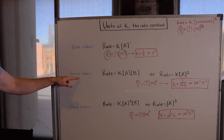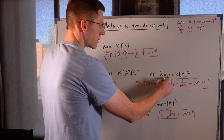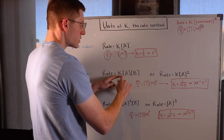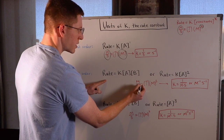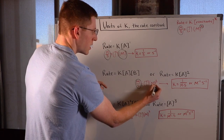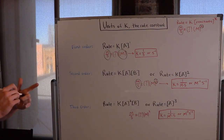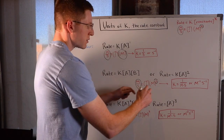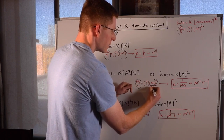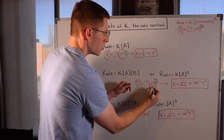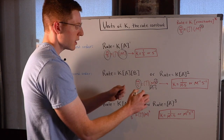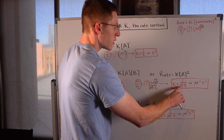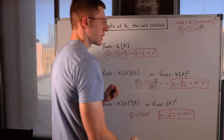What about if the reaction was overall second order? Then we would have something that looks like rate = K[A]² or rate = K[A][B] — both overall second order reactions. The rate is always molarity per second, and concentration squared gives molarity squared. So how do I make molarity squared times K equal to molarity per second? If I divide by molarity times seconds, the squared term becomes a one, and I'm left with molarity per second. So in a second order reaction, the units of K have to be one over molarity times seconds, or M⁻¹s⁻¹.